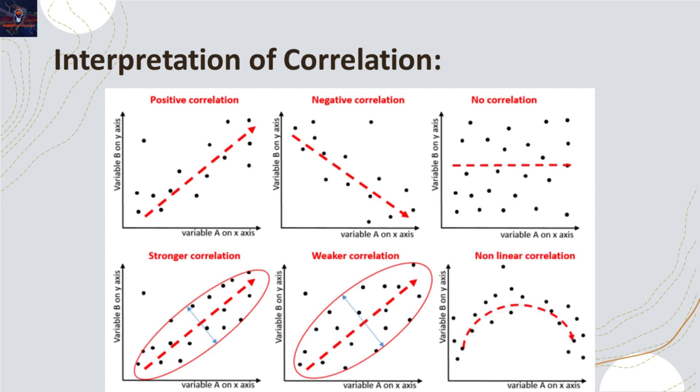In the final chart, we can observe a noticeable pattern among the data points, indicating some form of a relationship. However, it is clear that this relationship is not linear.